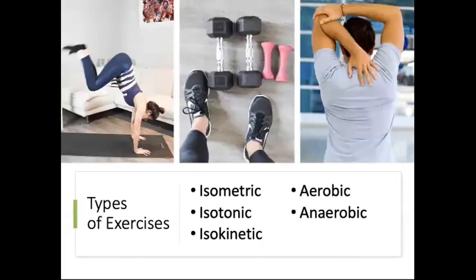Isometric exercise involves muscle contraction without motion, usually performed against an immovable surface or object — for example, pressing hands against a wall. Each position is held for six to eight seconds and repeated five to ten times. Isometric training effectively develops muscle group strength and requires no special equipment. Isotonic exercise involves joint movement during muscle contraction — the classic example is weight training with free weights, where the muscle shortens and lengthens through the range of motion. Calisthenics such as pull-ups, push-ups, and planks use body weight as resistance and are all isotonic exercises.